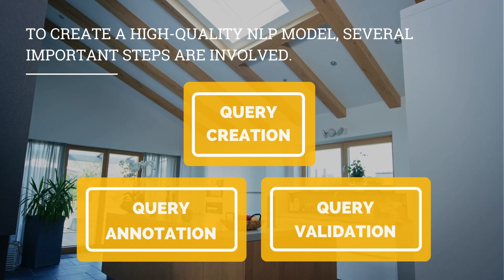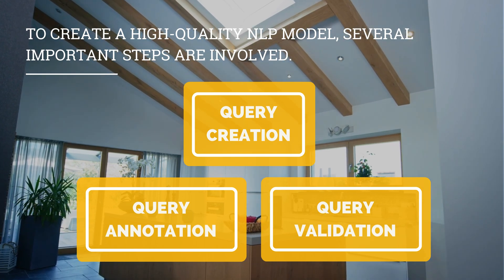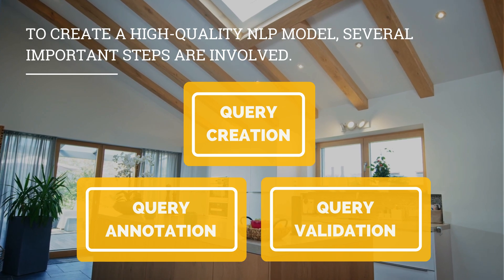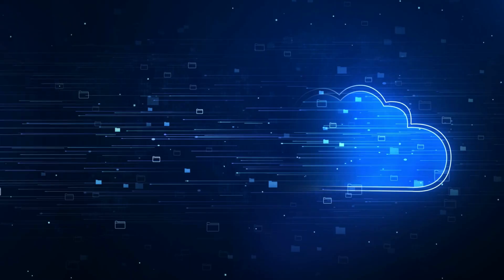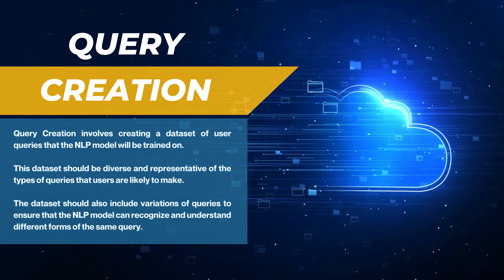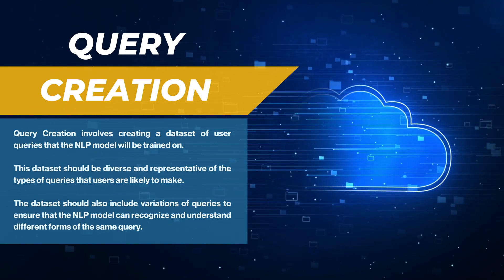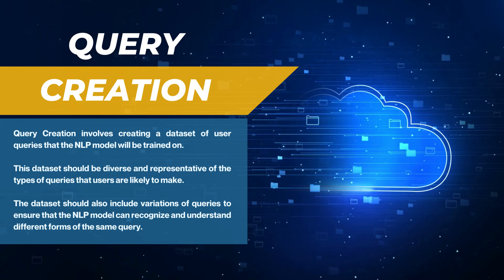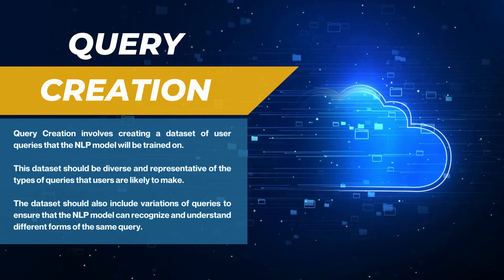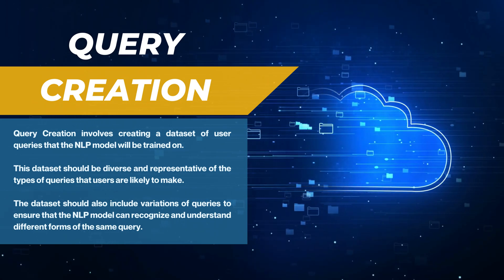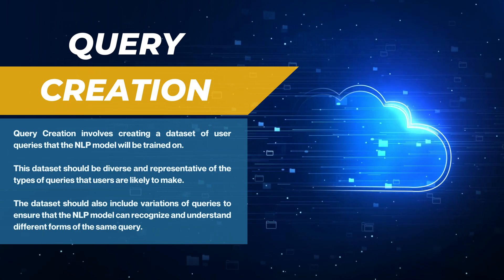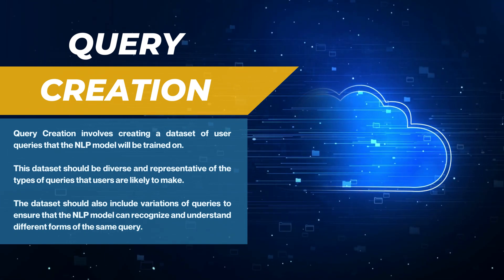To create a high-quality NLP model, several important steps are involved, including query creation, query annotation, and query validation. Query creation involves creating a dataset of user queries that the NLP model will be trained on. This dataset should be diverse and representative of the types of queries that users are likely to make, and should also include variations of queries to ensure that the NLP model can recognize and understand different forms of the same query.